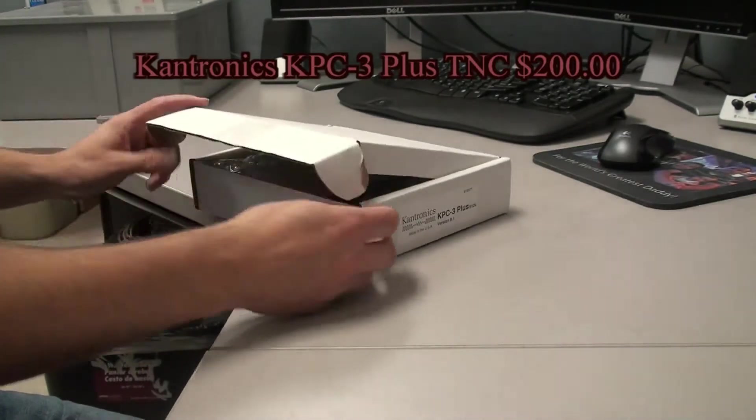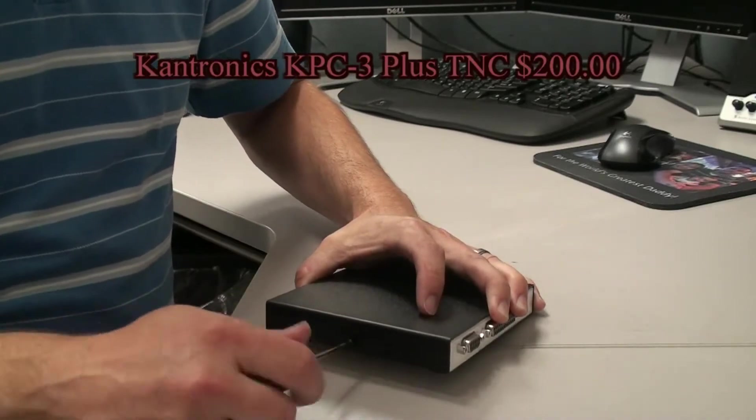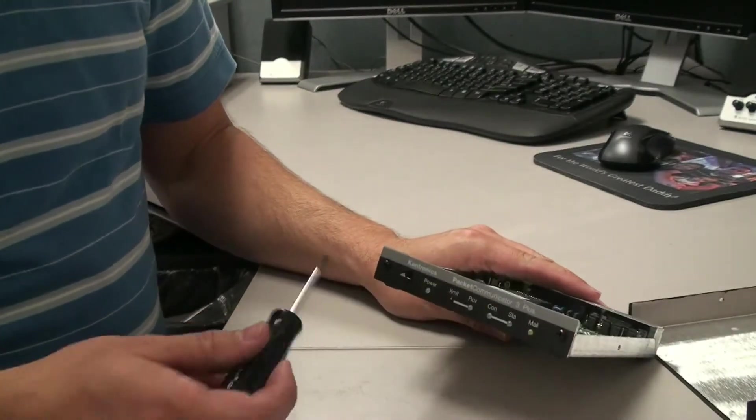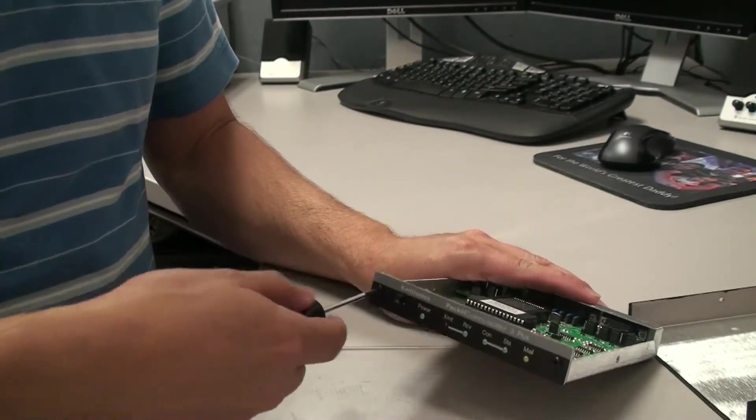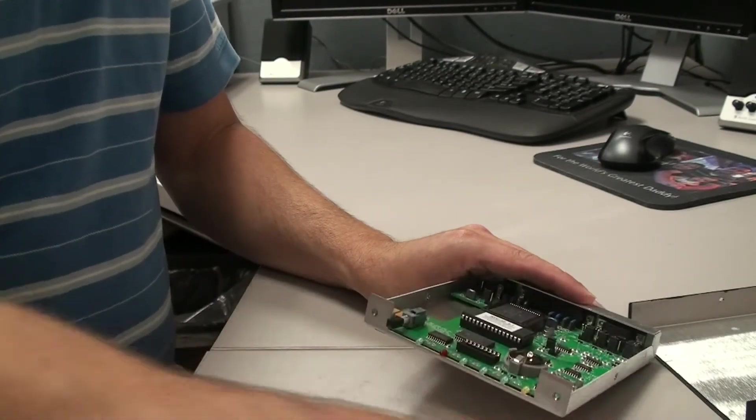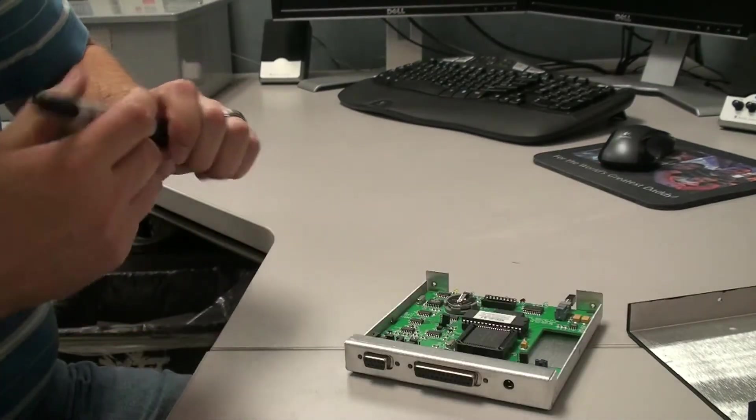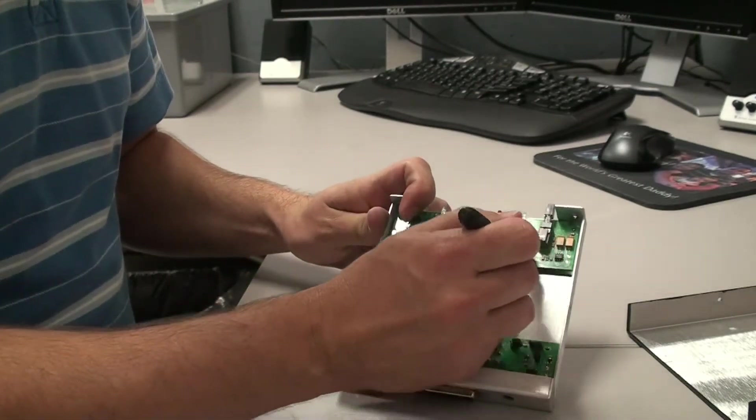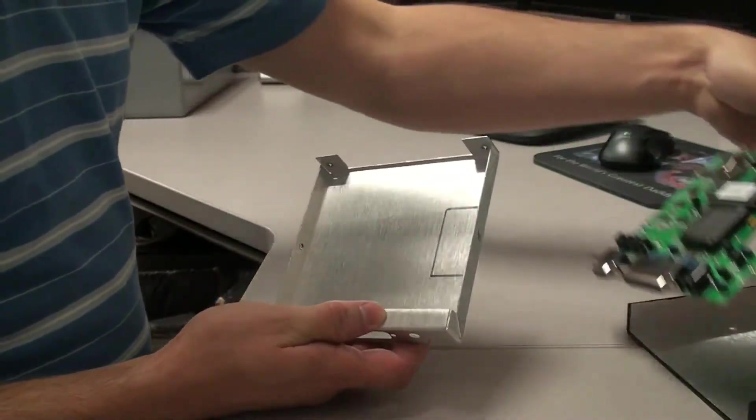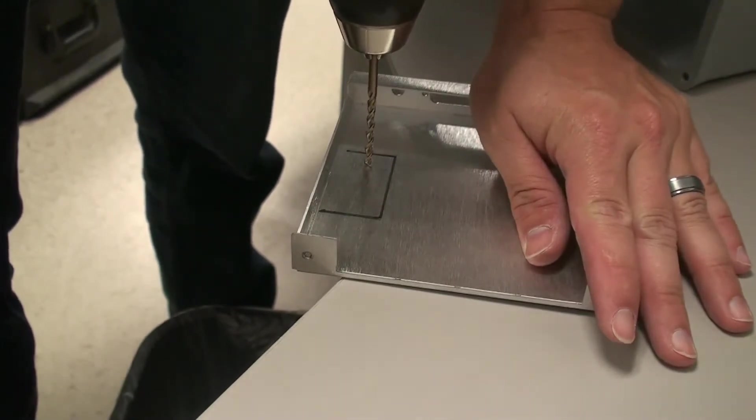It's time to start building our electronics boxes. Let's start by preparing the TNC for mounting by removing the circuit card from inside its enclosure. Use a marker to indicate the area where we can install the mounting screws. Now let's drill a couple of holes for those mounting screws to go in.